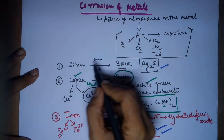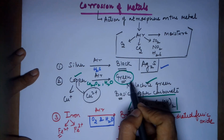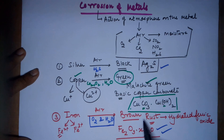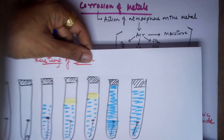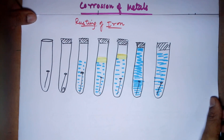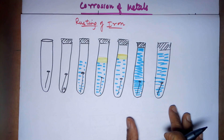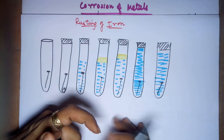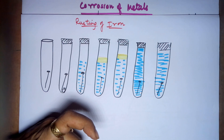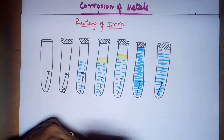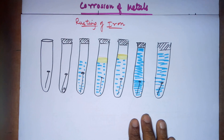So corrosion of metals commonly dealt with: silver turns black, copper turns green, and iron turns brown. Now I will take up the topic of rusting of iron in more detail. Please excuse the diagrams — I am not too good at them, but I have tried my best to draw diagrams for clearing up your concepts.